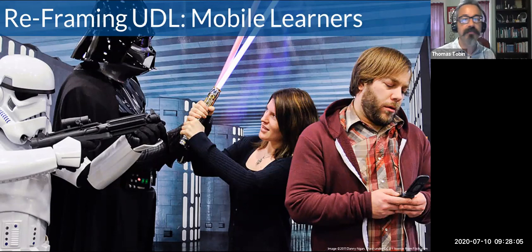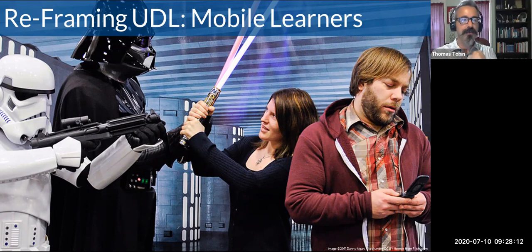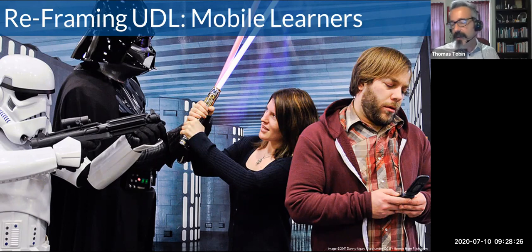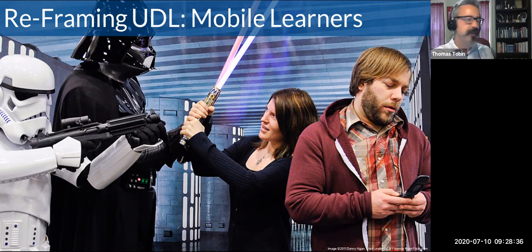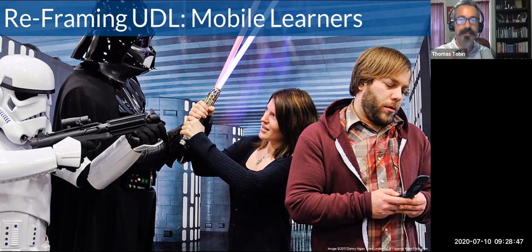On screen is a couple who won a contest to interact with costumed characters at Disney. The woman has picked up a lightsaber doing battle with Darth Vader while the man is looking at his phone. This illustrates that our students are likely using their mobile devices at least a bit — some a lot — to interact with us. If we think about them during their mobile device time, it helps us design those interactions more thoughtfully.